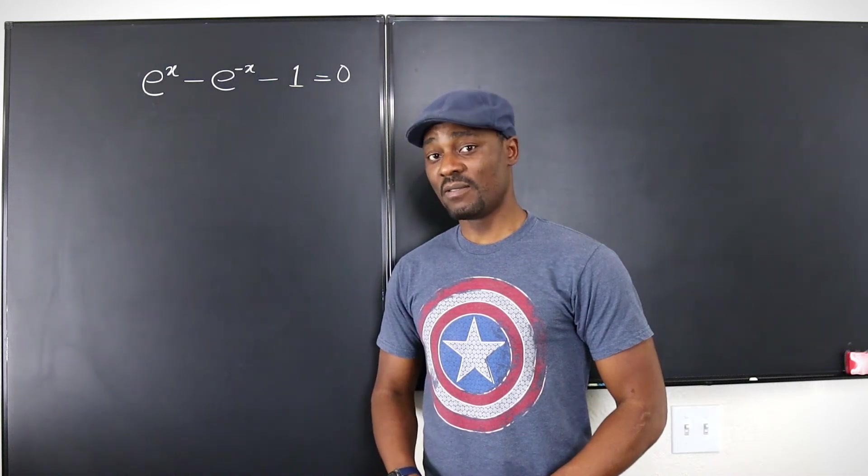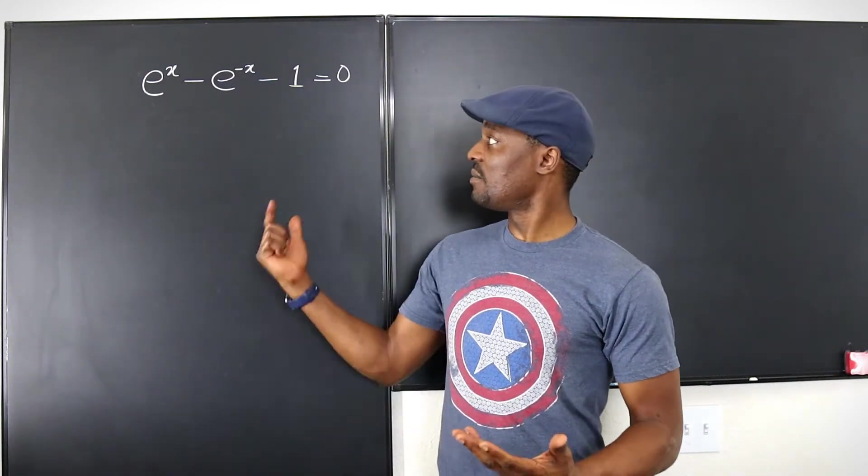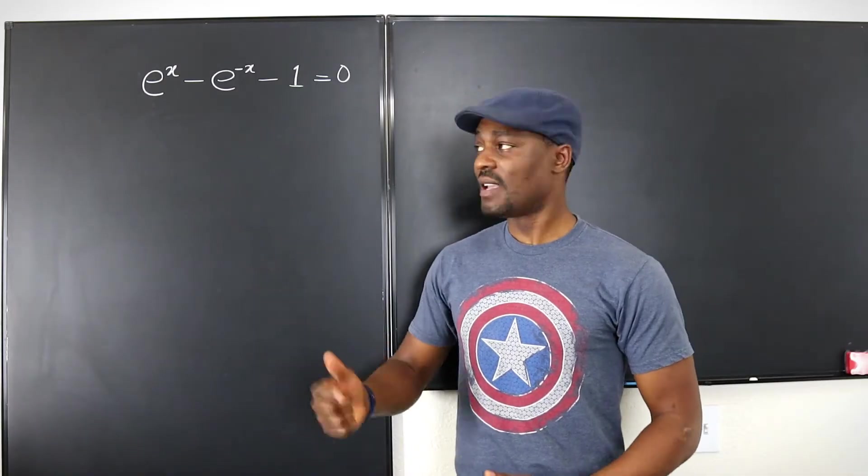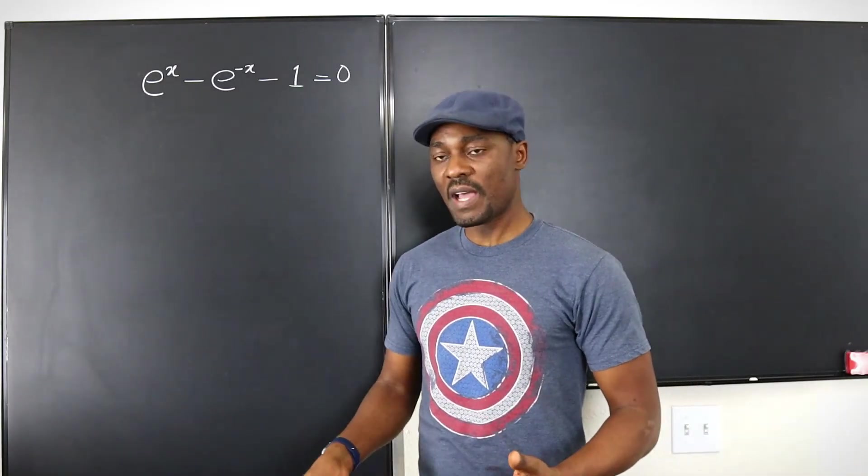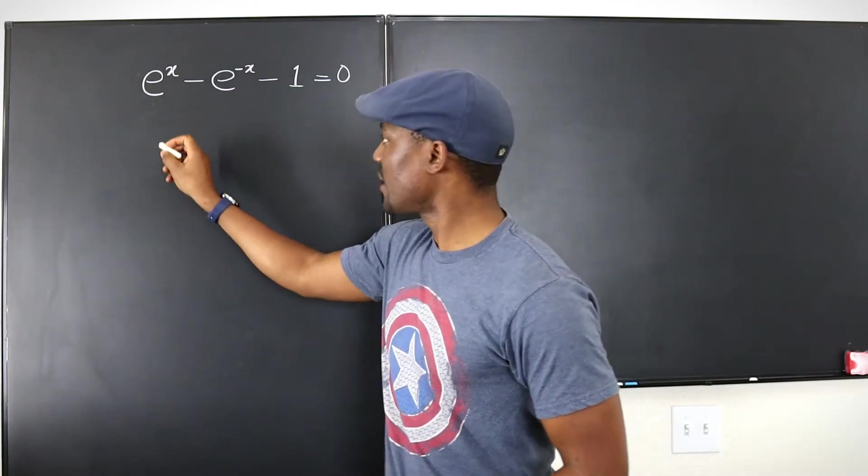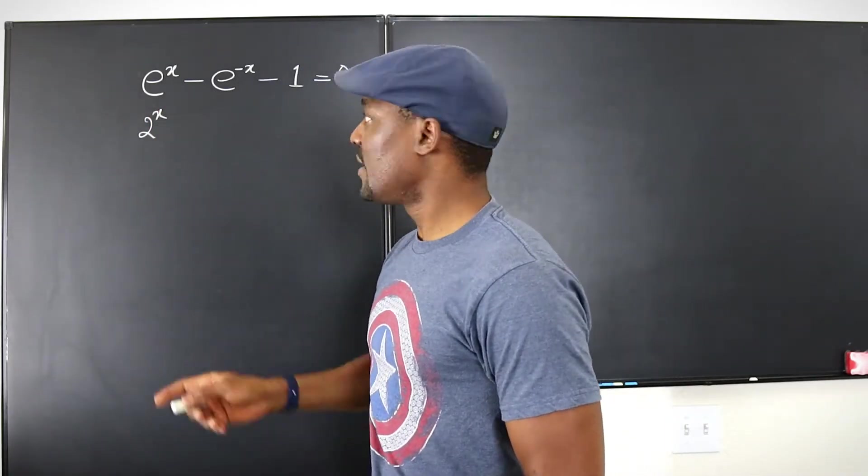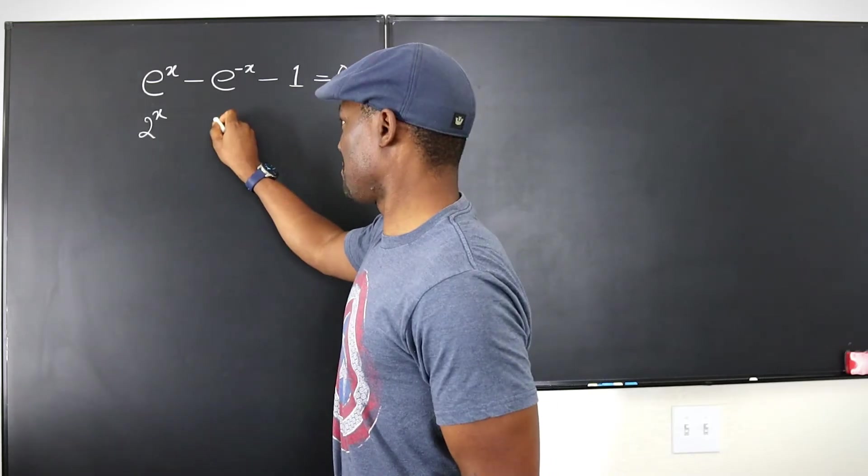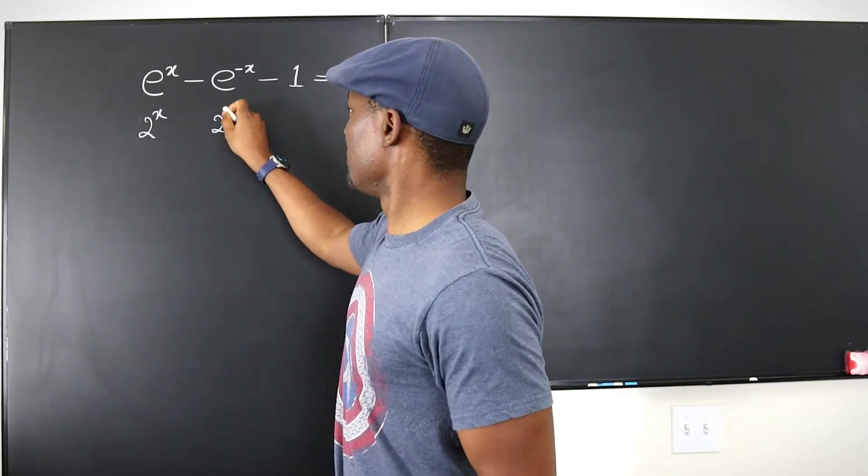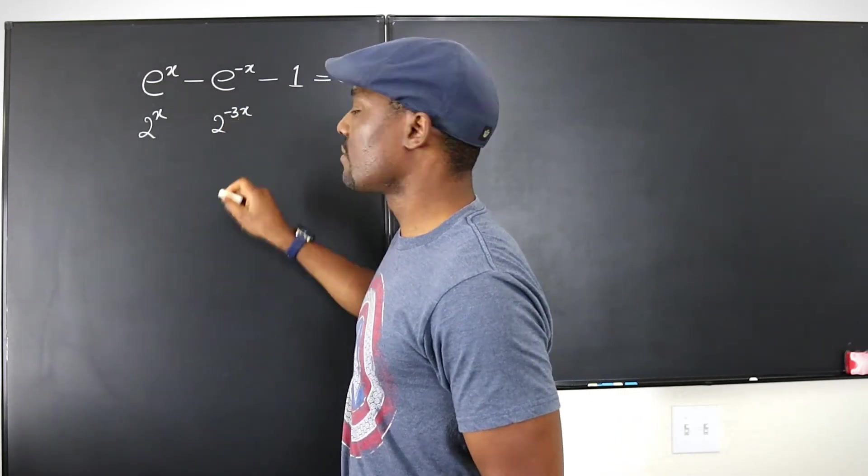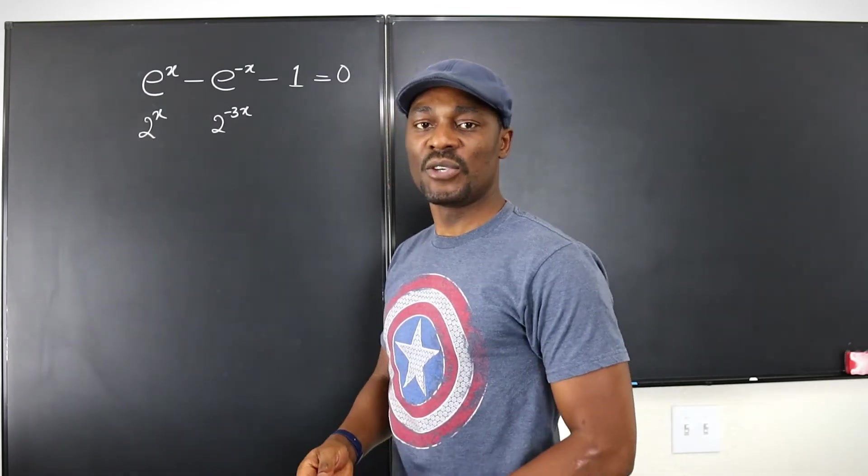Hello and welcome to another video. Now whenever you see a problem that looks like this, I want you to know that this e could be anything. It could actually be 2, and this could be 2 to the negative 3x. It depends on what they're trying to make you do.